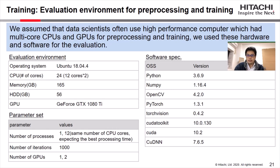Please note that we changed the number of processes from 1 to 12, which is the same as the number of CPU cores, so we can expect the best processing time. The software specifications are shown in the right table.